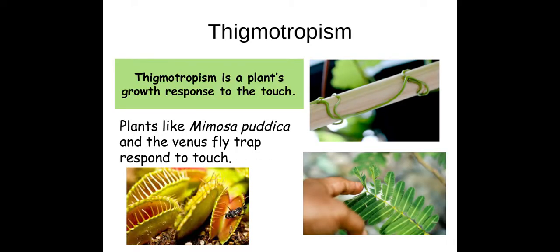Thigmotropism is a plant's growth response to touch. Mimosa pudica is a plant you need to know — it is named in the specification. When it is touched, the leaves coil up. This is a twofold benefit: the folding and movement of the leaves might help to scare away herbivores, and it also protects the leaves because as it curls up, they're less likely to be eaten.